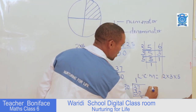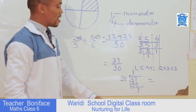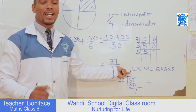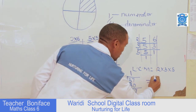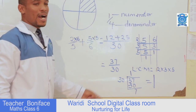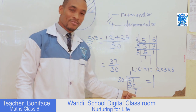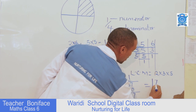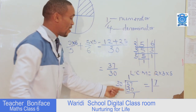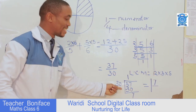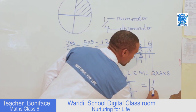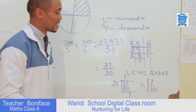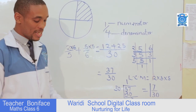So our answer will be very simple. The quotient is the whole number, which is one. And the remainder is usually the numerator — that's seven. The number we were dividing by, thirty, is the denominator. So the answer is one and seven over thirty. That's our first example.